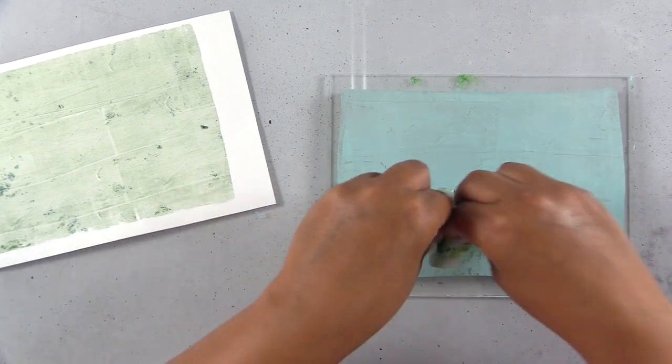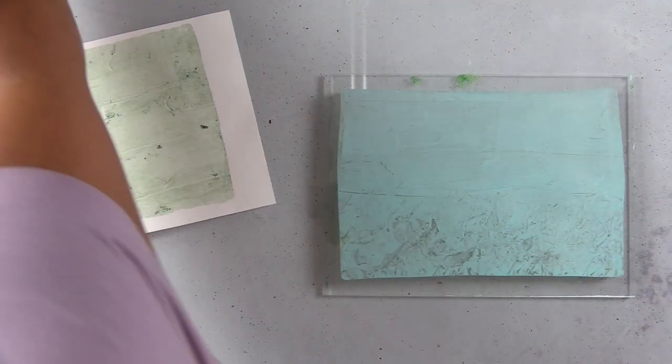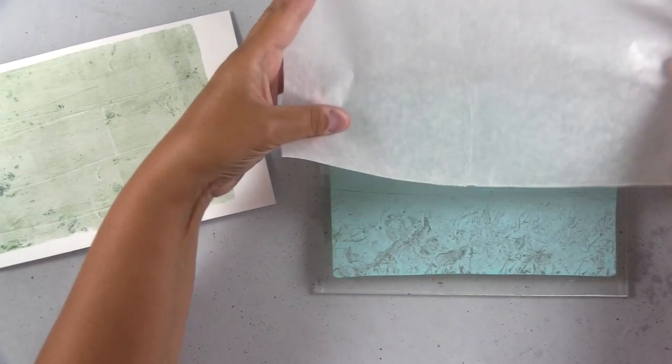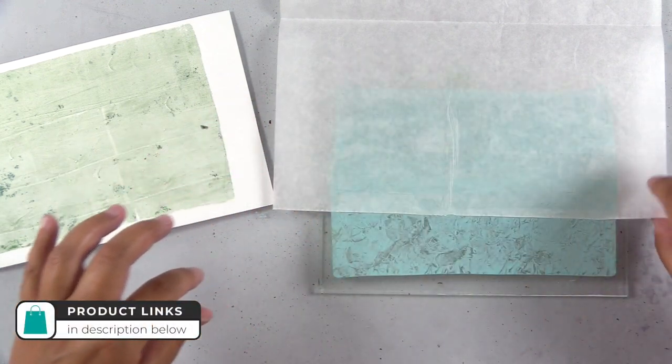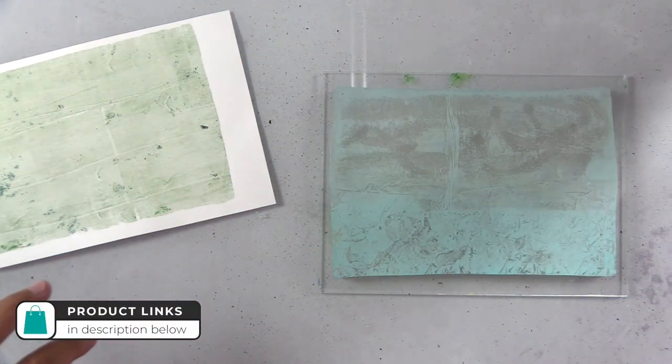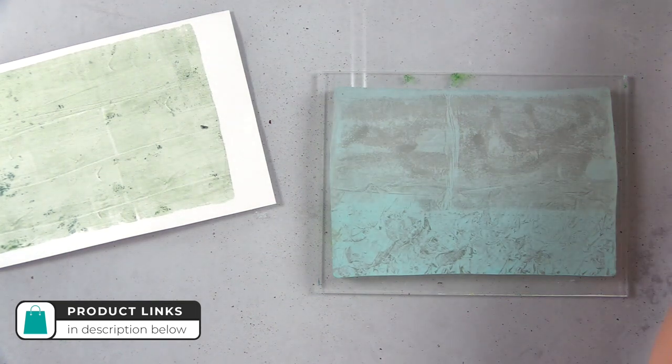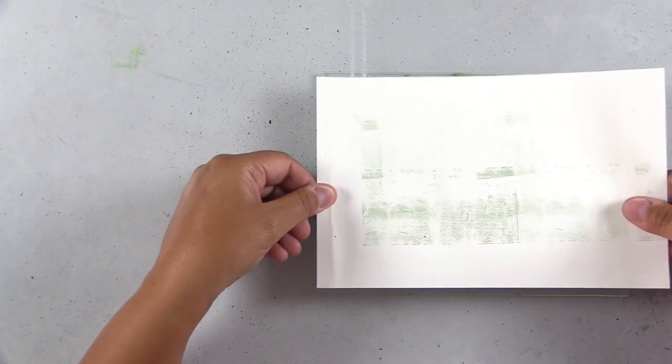Here, I have a crumpled up piece of deli paper. Deli paper is what you use to wrap up your sandwiches. Here's a fresh piece of deli paper, and as always, I'll have all of the supplies linked down below for you guys. I just used that to pull off some of the paint. I didn't want to completely cover up this green.